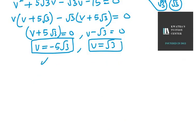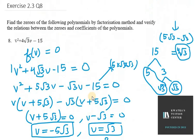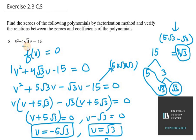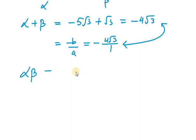So α = -5√3 and β = √3. The sum of zeros, α + β = -5√3 + √3 = -4√3. To verify: -b/a, where b is 4√3 and a is 1, gives -4√3 over 1 = -4√3. You can see that both sides are equal.